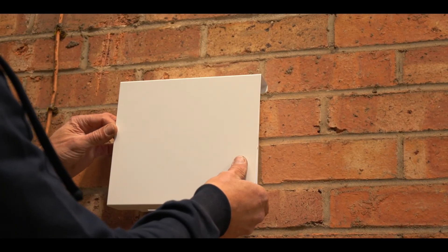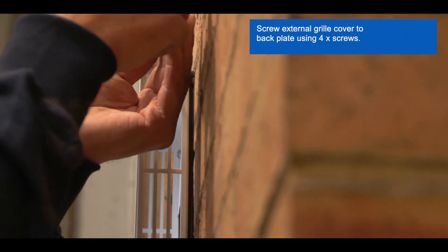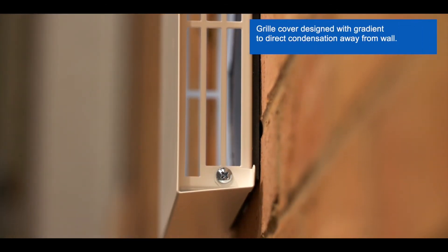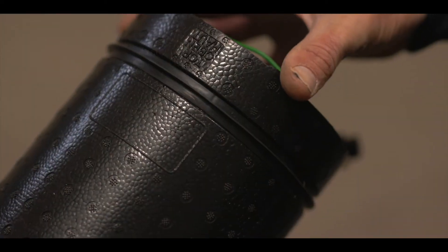Place the external grill cover over the back plate and screw securely in position. The angle ensures condensation drains away. Once the wall sleeve is installed, the condensation is directed towards the external grill thanks to the condensate wedge.